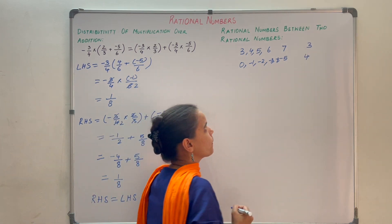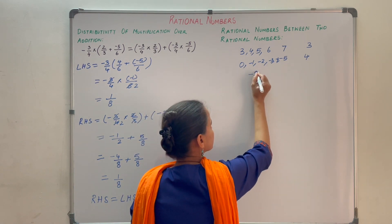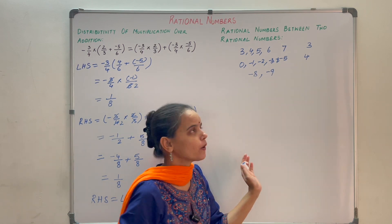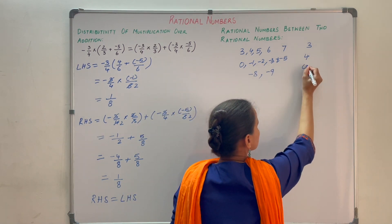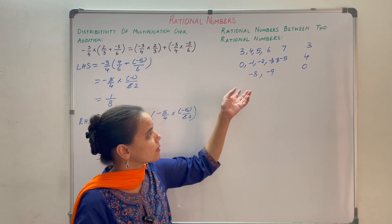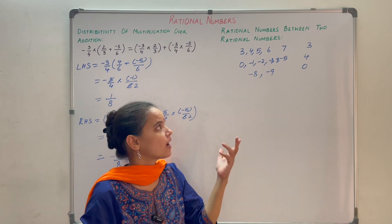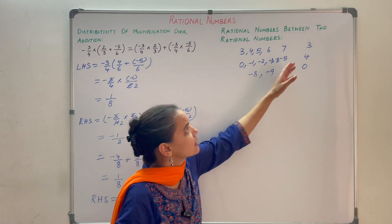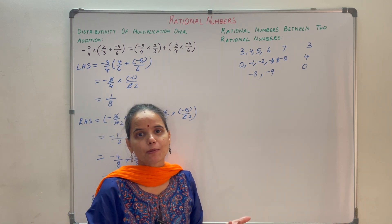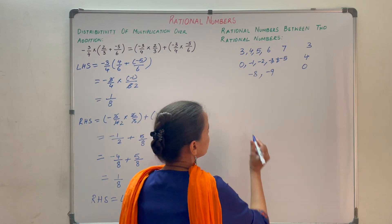If I ask how many integers are there between minus 8 and minus 9, you can clearly see there are no integers — that means 0 integers. So for natural numbers or integers between two given numbers, that set is finite and you can count and tell. But what about rational numbers? Let us understand with an example.